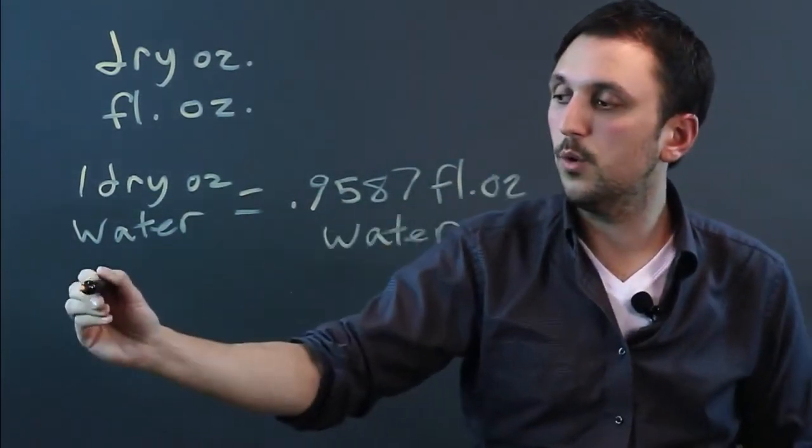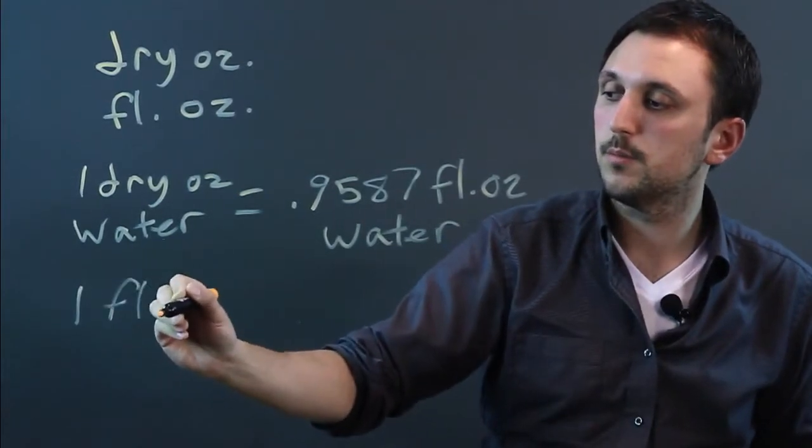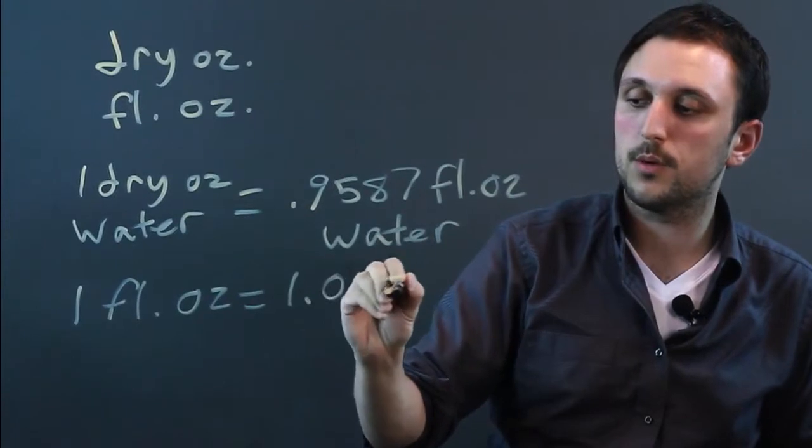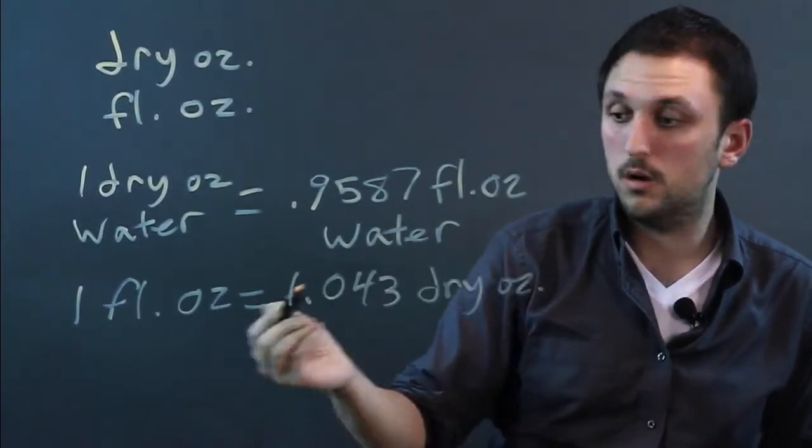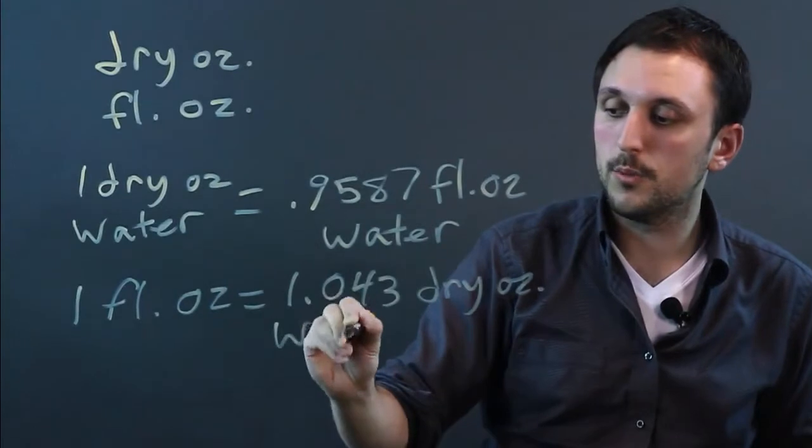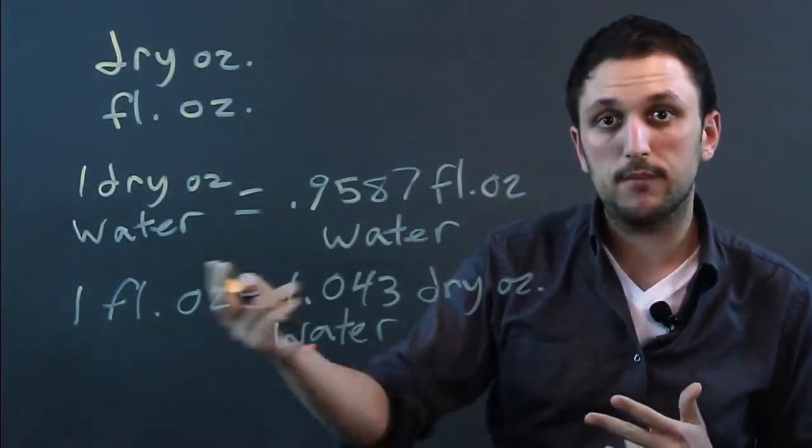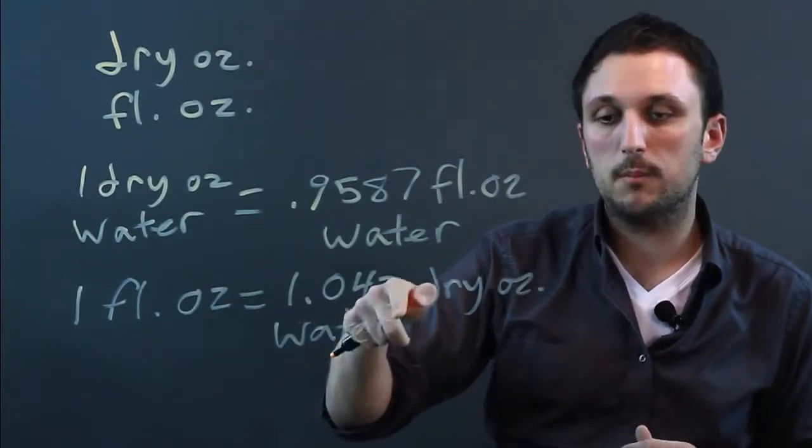And one fluid ounce equals 1.043 dry ounces of water. So with water, they're very close together, but something that has a much greater density may have a much smaller volume and a much higher weight.